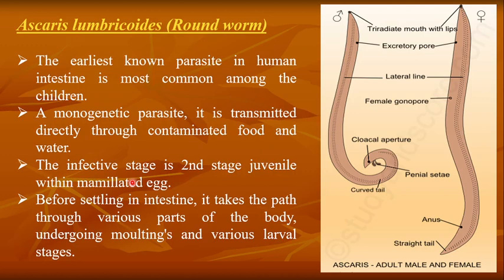The infective stage is the second-stage juvenile within mammillated eggs. Before settling in the intestine, it takes a path through various parts of the body, undergoing moltings and various larval stages. The second-stage juvenile causes infection in the intestine of human beings, entering through contaminated food and water.